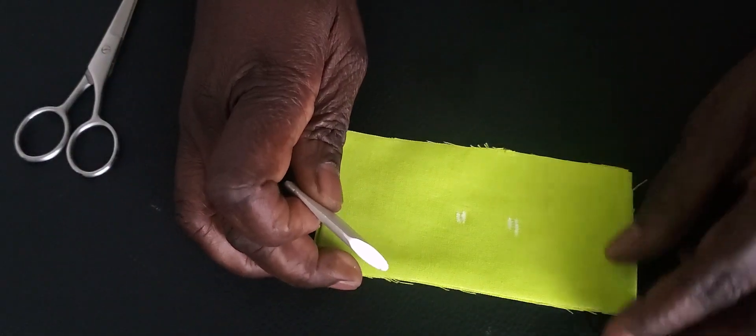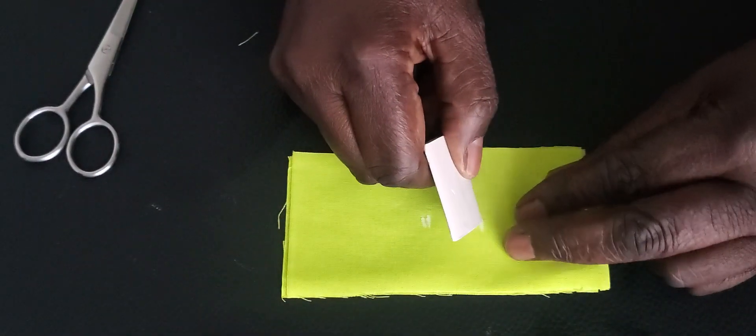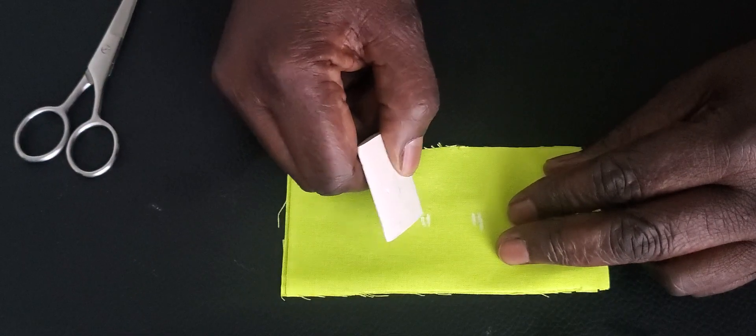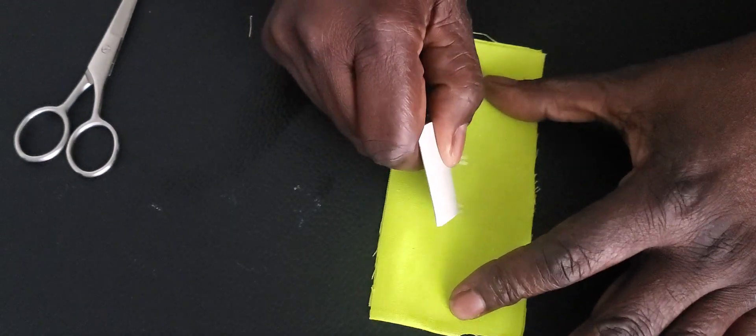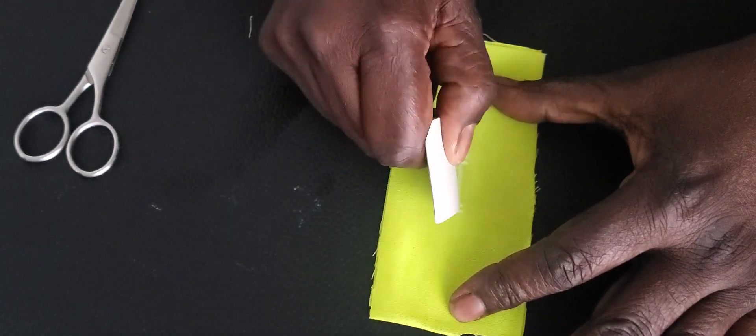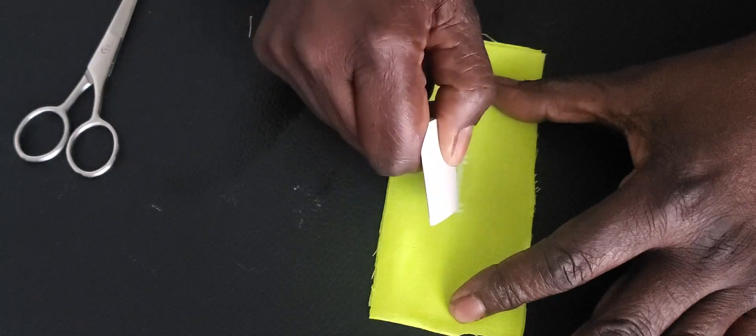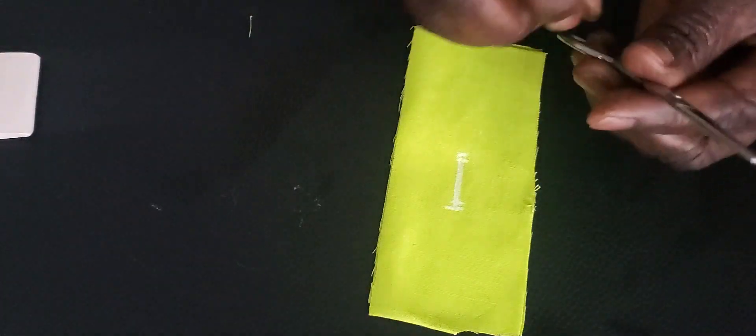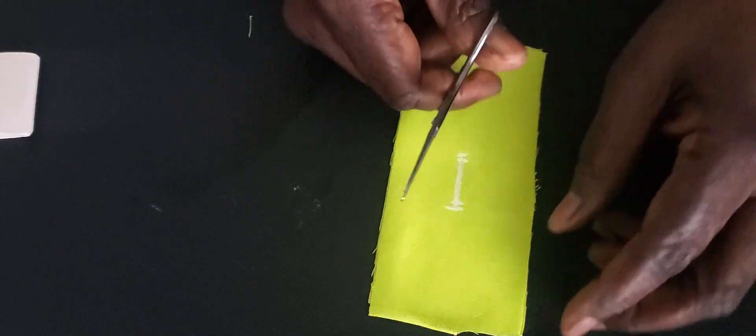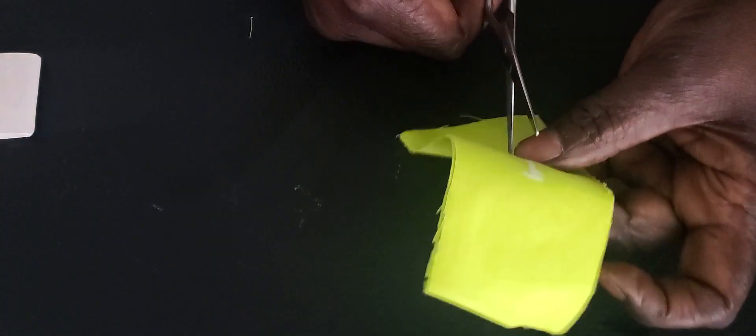Having measured that way, you draw a line from the last mark on this side and the last mark on this side. So you draw a straight line, then you look for a sharp tool you can use.